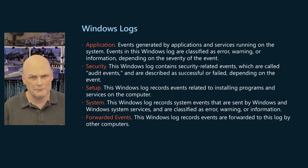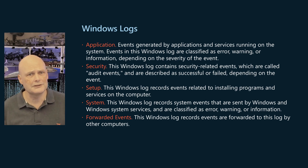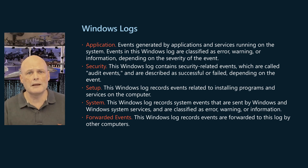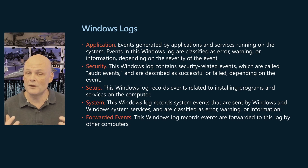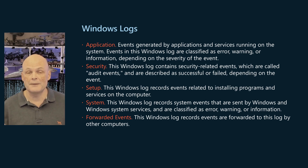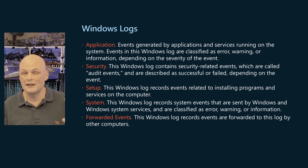The Forwarded Events Log is a special log that records events that are forwarded to this computer by other computers. Event Log Forwarding is built in to Windows Server and allows you to centralize all your event logs on a single computer. It's very basic compared to dedicated telemetry tools like System Center Operations Manager or your favorite third-party alternative.